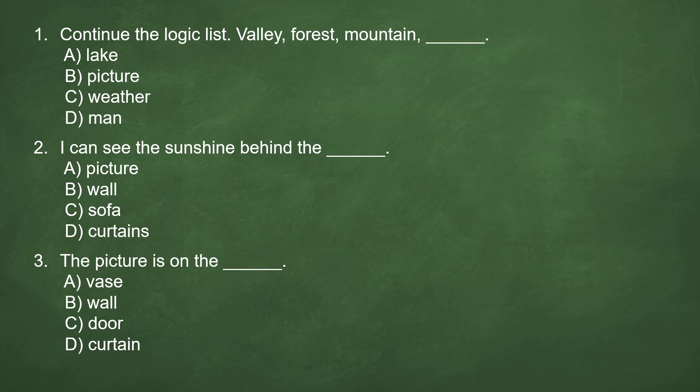Number 1. Continue the logic list. Valley, forest, mountain, blank. A. Lake. B. Picture. C. Weather. D. Man. Answer: A. Lake. Valley, forest, mountain, lake.